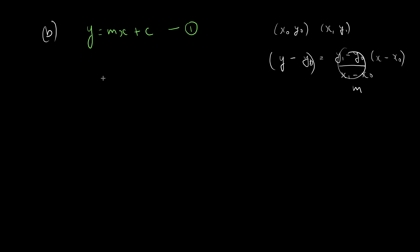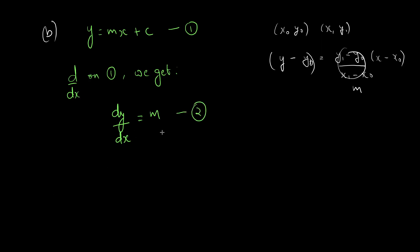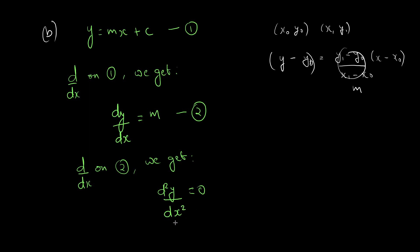We have y equal to mx plus c. Differentiating with respect to x on equation 1, we get dy by dx equal to m. We need to eliminate m also, so differentiating with respect to x on equation 2, we get d squared y by dx squared equal to 0. This is a differential equation of second order and there is no arbitrary constant — all arbitrary constants were eliminated. Two arbitrary constants were there, so the differential equation will be of second order. This is the required differential equation.